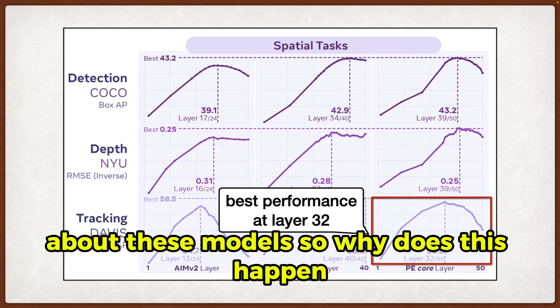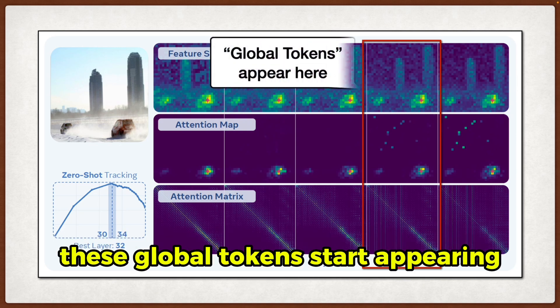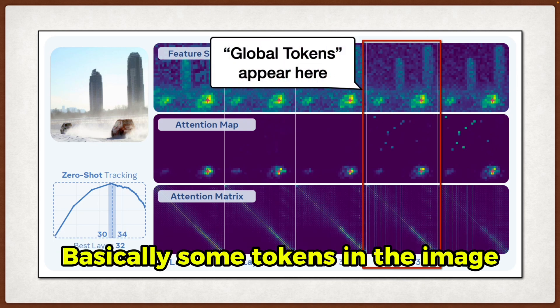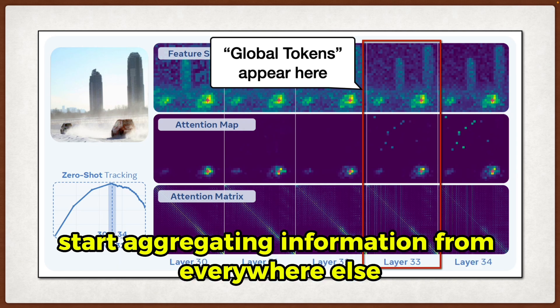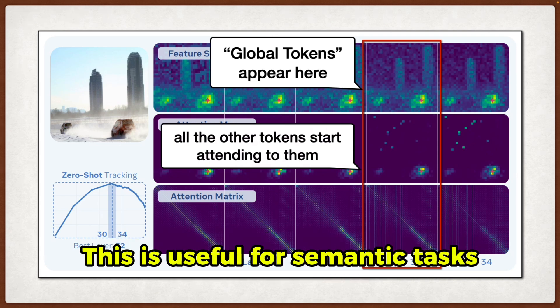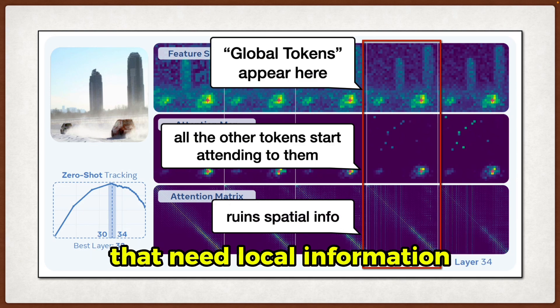So why does this happen? They dig into it and find that around layer 33, these global tokens start appearing. Basically, some tokens in the image start aggregating information from everywhere else, and all the other tokens start attending to them. This is useful for semantic tasks, but ruins spatial tasks like tracking that need local information.